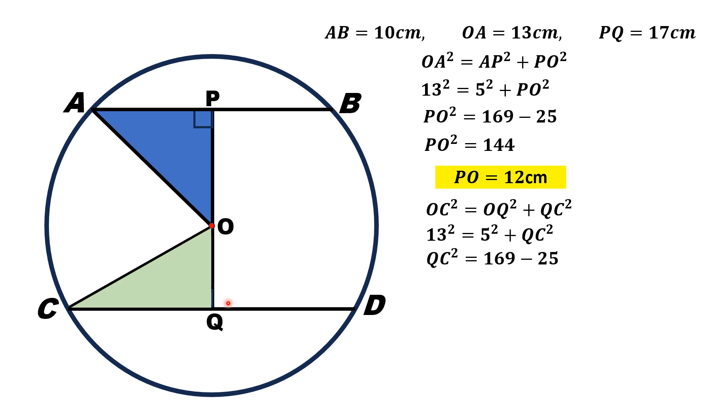Now, simplifying this one, QC squared is equal to 169 minus 25, and that is equal to 144. From here, QC is equal to 12 cm. This length is 12 cm.